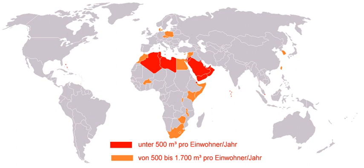Surface runoff is water that flows when heavy rains do not infiltrate soil — excess water from rain, meltwater, or other sources flowing over the land. This is a major component of the water cycle. Runoff that occurs on surfaces before reaching a channel is also called a non-point source. When runoff flows along the ground, it can pick up soil contaminants including petroleum, pesticides, or fertilizers that become discharge or non-point source pollution.